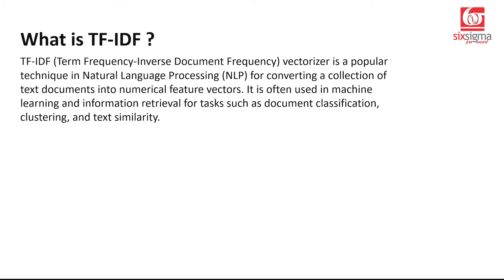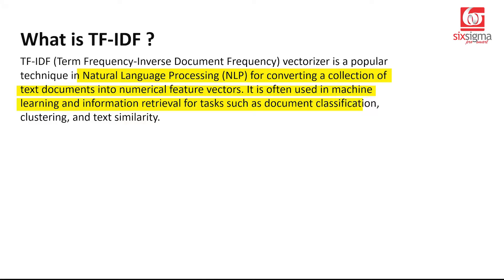TF-IDF is derived from term frequency and inverse document frequency — that's what TF and IDF stand for. It's a popular technique in natural language processing for converting a collection of text documents into numerical feature vectors. It is often used in machine learning and information retrieval for tasks such as document classification, clustering, and text similarity.